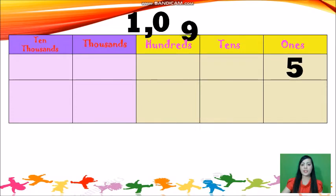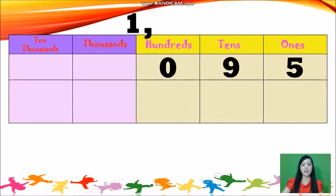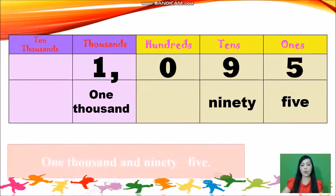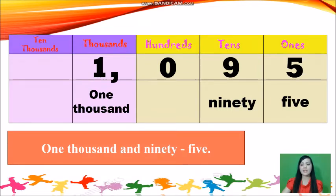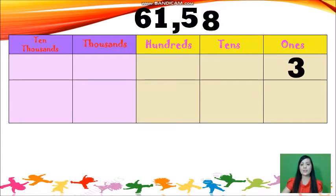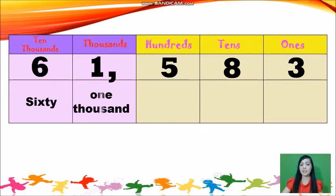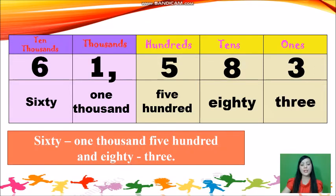Next: put 3 in the 1s place, 8 in the 10s place, 5 in the 100s place, 1 in the 1,000s place, and 6 in the 10,000s place. Reading by period: 61,000 for the thousands period, and 583 for the ones period. So we can read that as 61,583. Don't forget to write a comma after the 100s place.